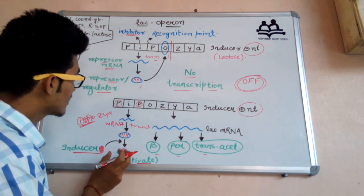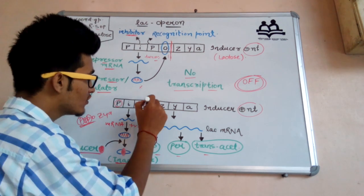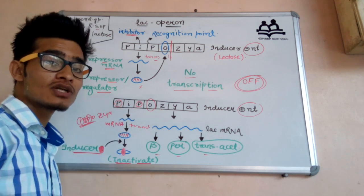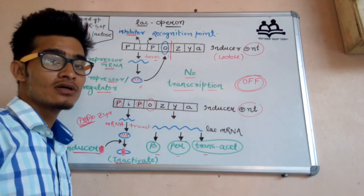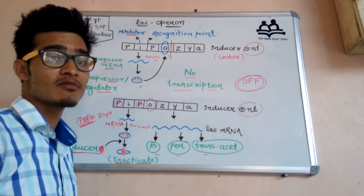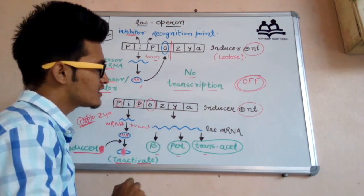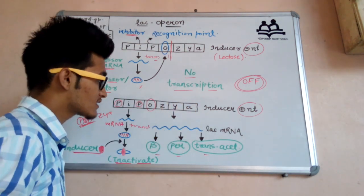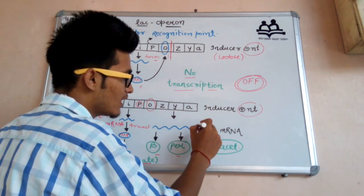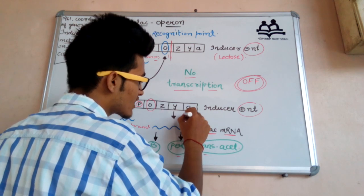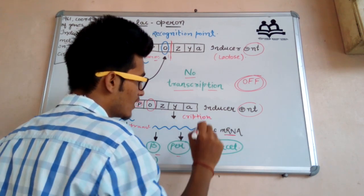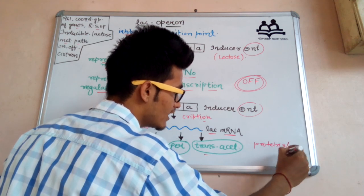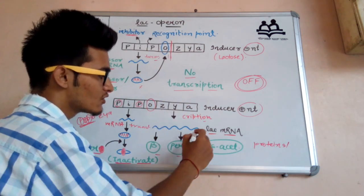Since the operator site is open, RNA polymerase moves forward, polymerization occurs, mRNA synthesis happens, and protein synthesis follows. There are three structural genes — Z, Y, and A. When RNA polymerase moves forward, it transcribes the structural genes, forming lac mRNA. The formation of mRNA from DNA is transcription, and the formation of proteins from mRNA is translation.